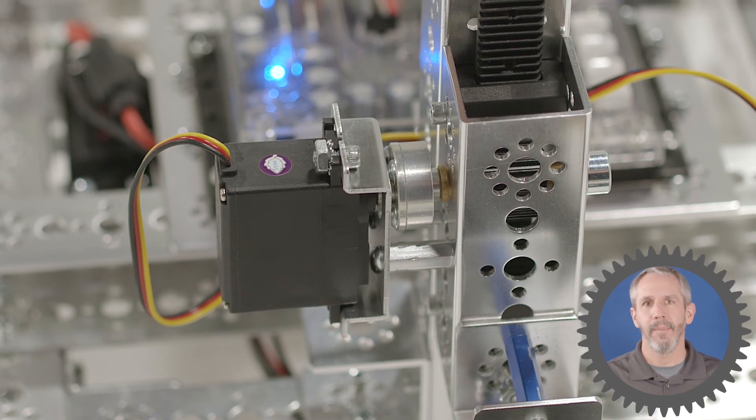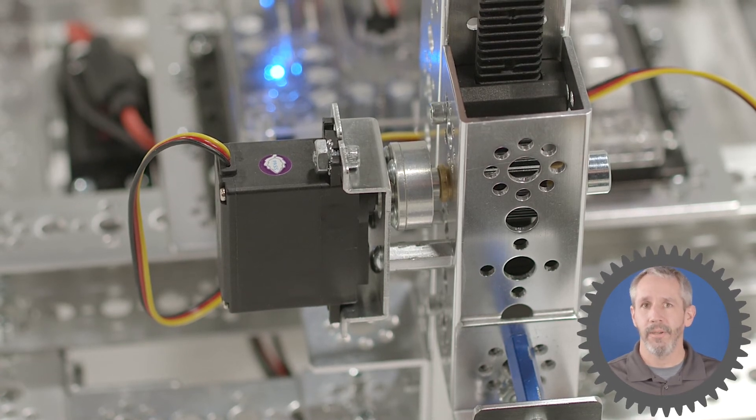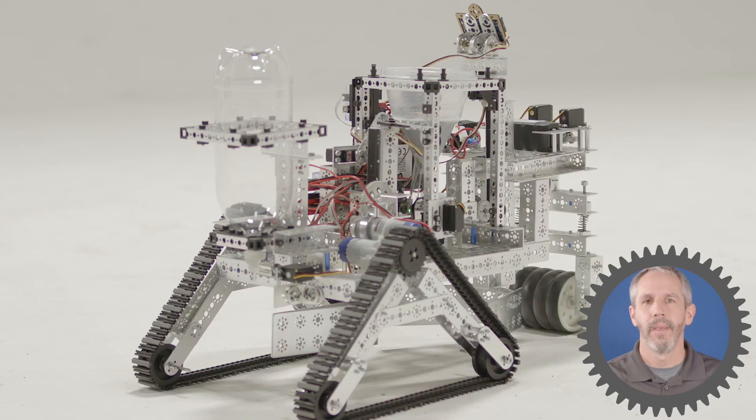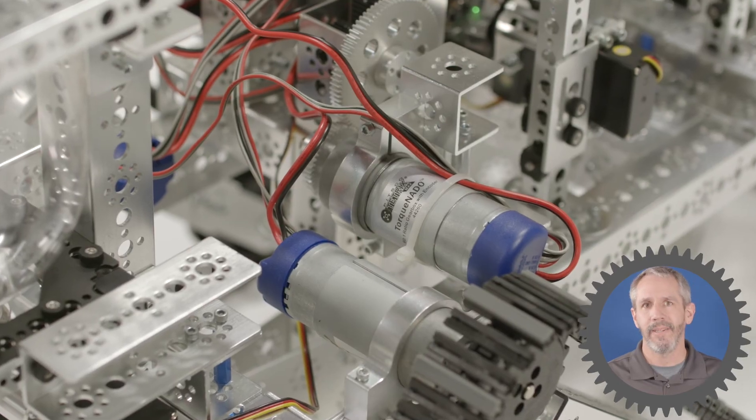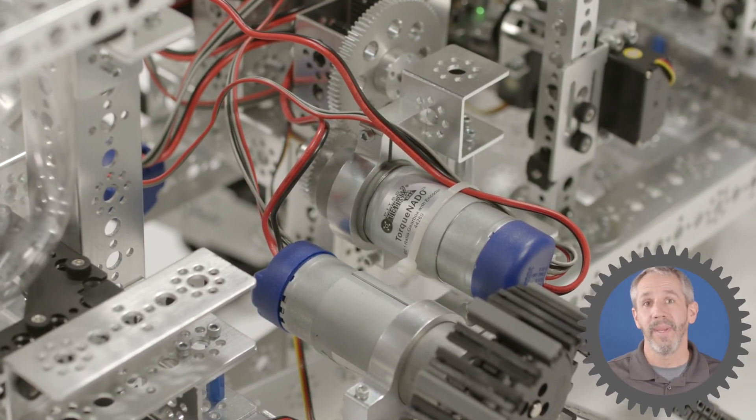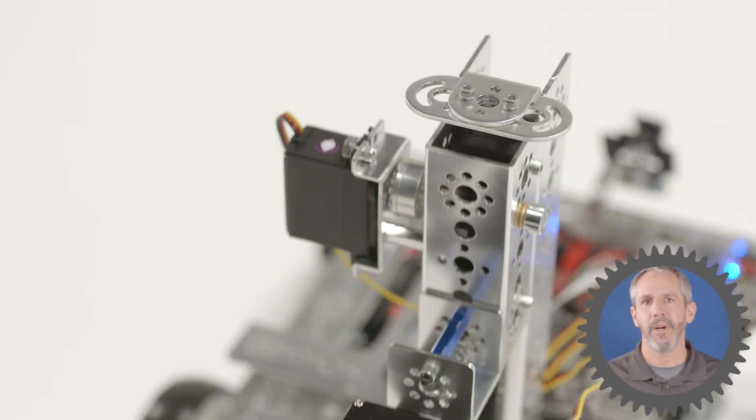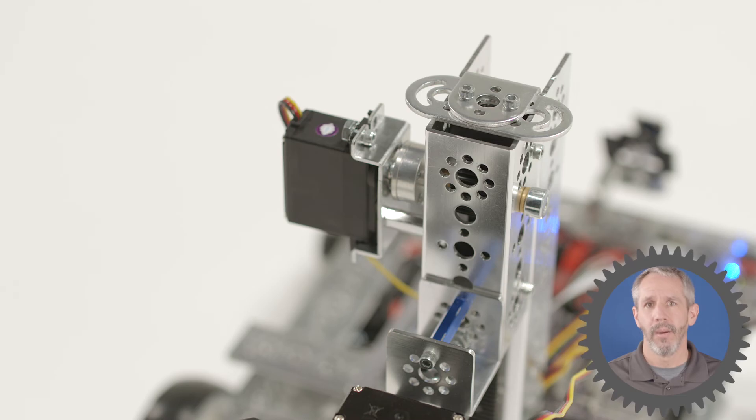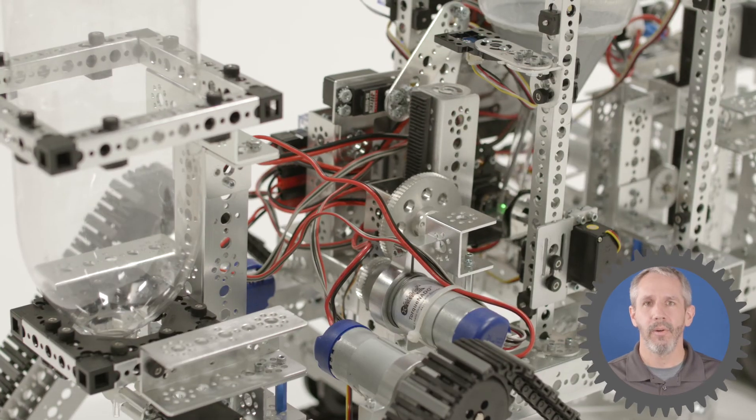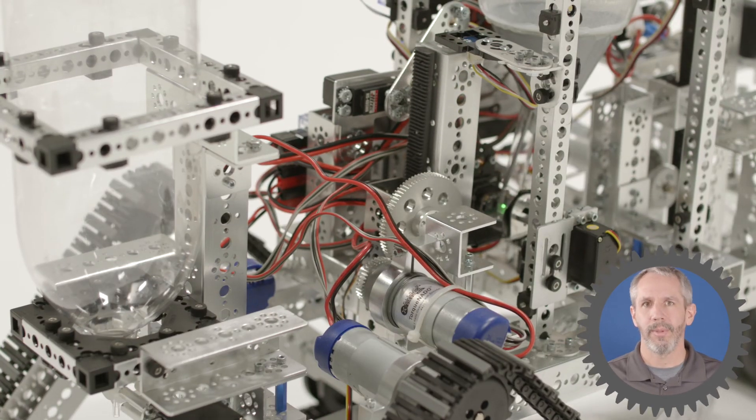That pinion gear can be driven by a continuous rotation or CR servo, or it can be driven by a DC motor, such as a Torquenado motor. We recommend using limit switches or mechanical stops to keep your pinion gear from traveling off of the rack gear. Or if you're using a Tetrix Torquenado, you can use the encoders to accomplish the same thing.